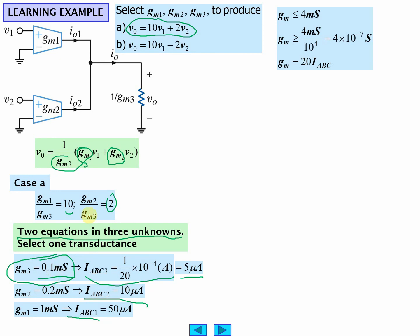GM3 is a tenth. That means GM1 has to be a one, and GM2 has to be two tenths from this equation here. Okay, now this is a subtractor.